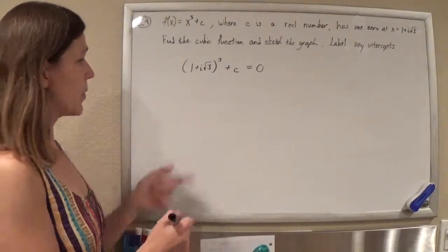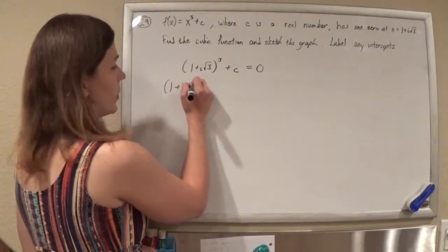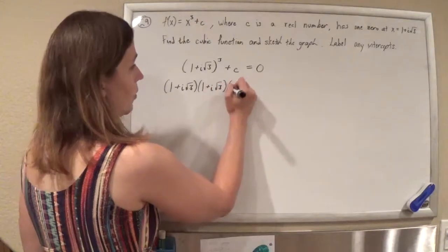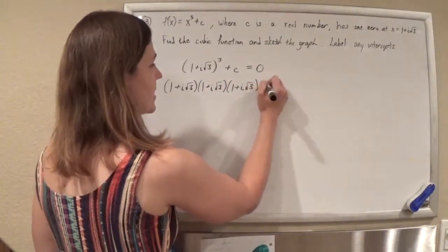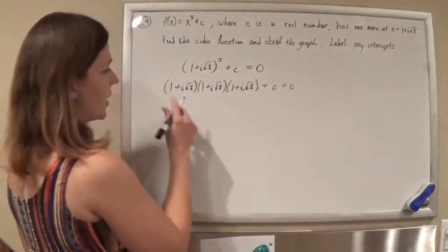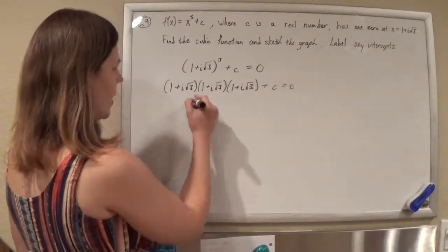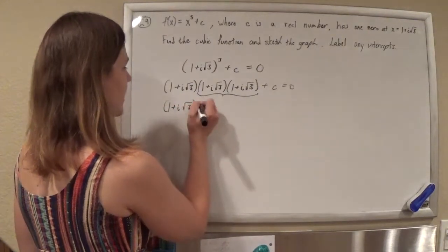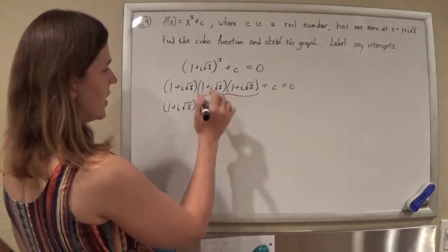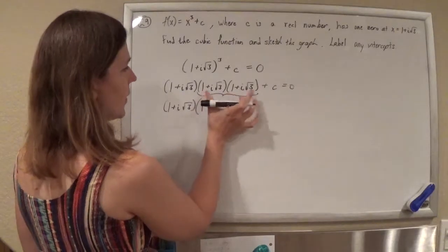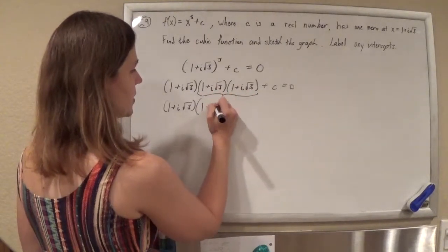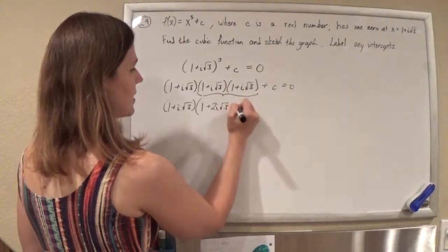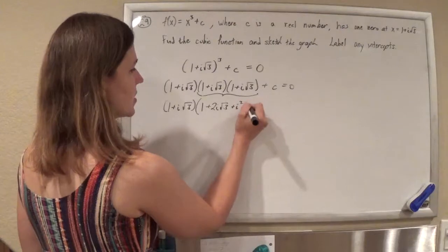I'm going to go ahead and multiply this whole thing out. You can use the binomial theorem if you want — you have to know it for the test anyway, so you can practice with that. But if you forget it or just want to do it the old-fashioned way, we can just multiply it out. When I FOIL these, I'll get 1 plus i√3 plus another i√3, which is plus 2i√3.